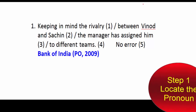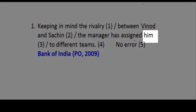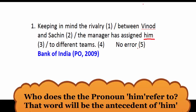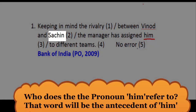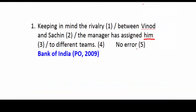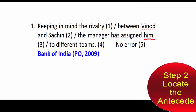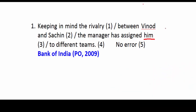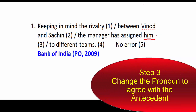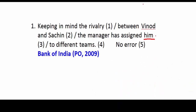Our first job is to identify the pronoun. You might have identified it correctly — it's 'him.' The sentence says the manager has assigned him to different teams. Now, who does 'him' refer to — is it Sachin, Vinod, or both? Since they are talking about different teams, 'him' must refer to two people, because one person cannot be assigned to multiple different teams. So 'him' is referring to both Vinod and Sachin, which means 'him' is not correct.